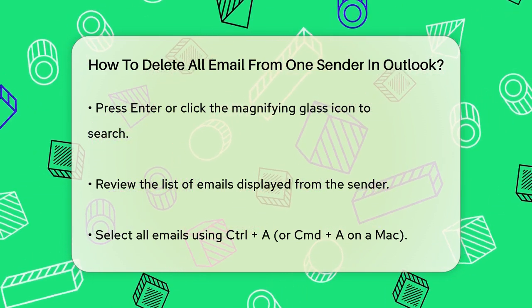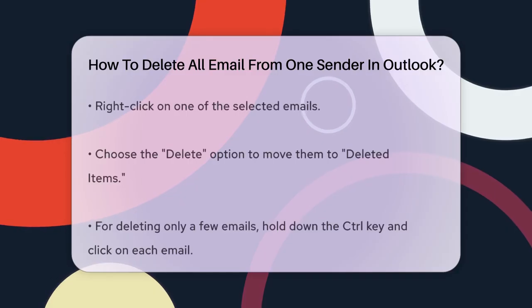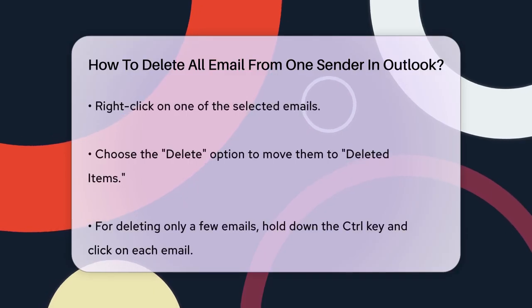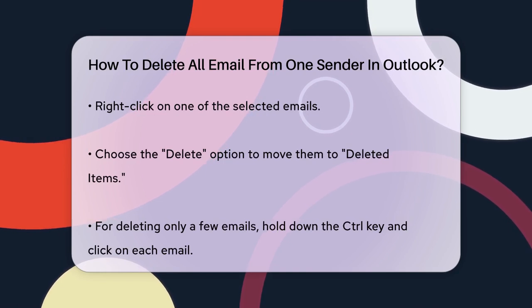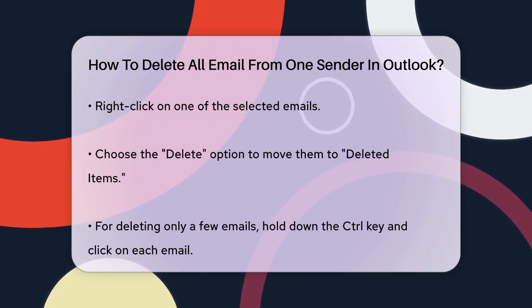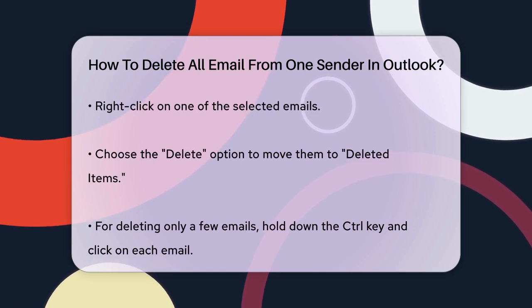This shortcut selects all the emails in the search results. After selecting all the emails, right-click on one of the selected emails and choose the Delete option. This will move all the selected emails to the Deleted Items folder.